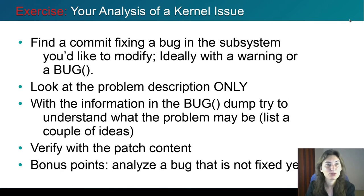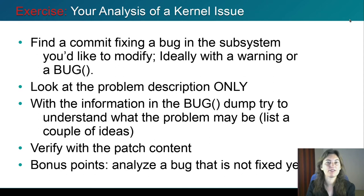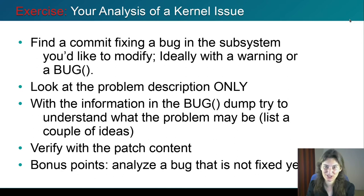When you have some time, take a look at an existing kernel issue that has a fix. Find a commit fixing a bug in the subsystem you want to work on — ideally a bug with a complete trace in the commit messages. Look at the description, not the solution, and try to figure out what the issue is based on the description alone. List a couple of ideas if you have more than one, then verify if you're right by looking at the patch. If you can analyze a bug that hasn't been fixed — for example, in the kernel bugzilla — you get bonus points and can try to fix it.